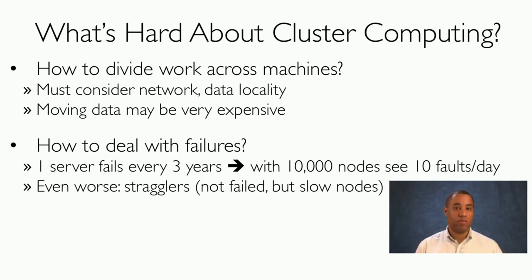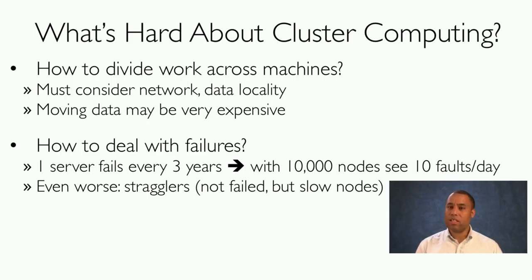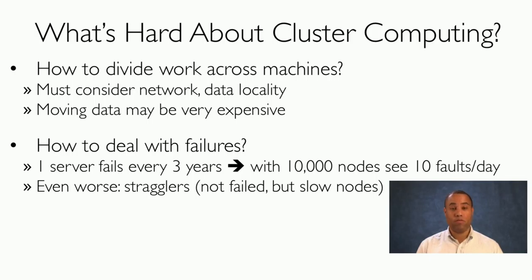What makes cluster computing difficult? There are two challenges. First, how do we divide work across machines? We have to consider our network — how it's organized, how fast or slow it is — and we have to consider data locality, because moving data may be very expensive, especially with a lot of data. The second challenge is dealing with failures. If a server fails on average every three years, with 10,000 nodes in our cluster we'll see 10 faults per day. An even more difficult problem is stragglers — nodes that have not failed but are just running very slowly, maybe because they're about to fail, which is much more common than complete node failures.